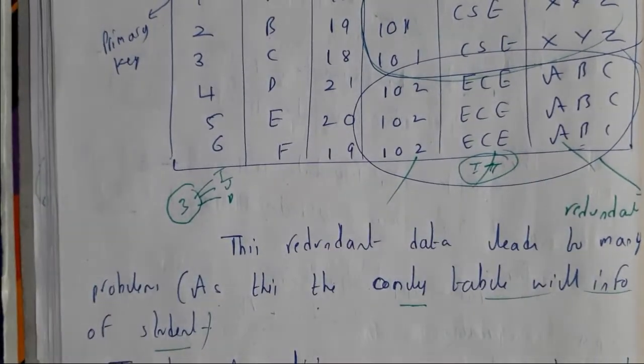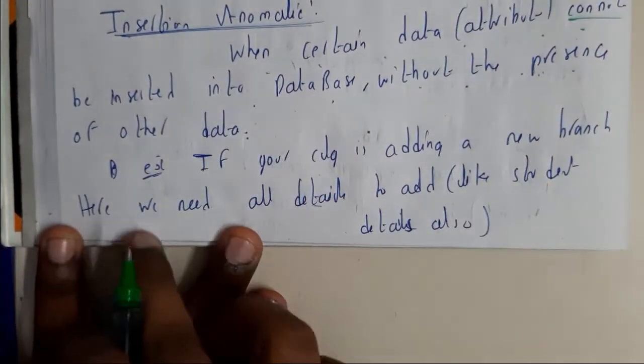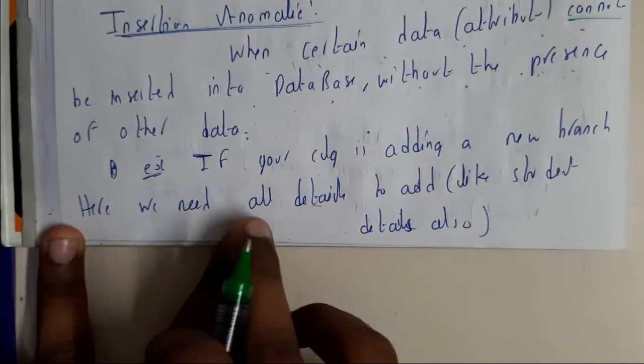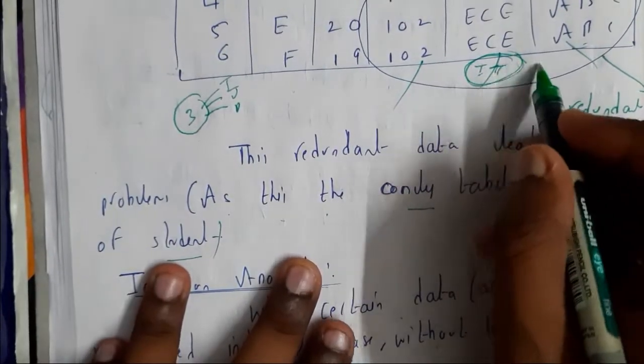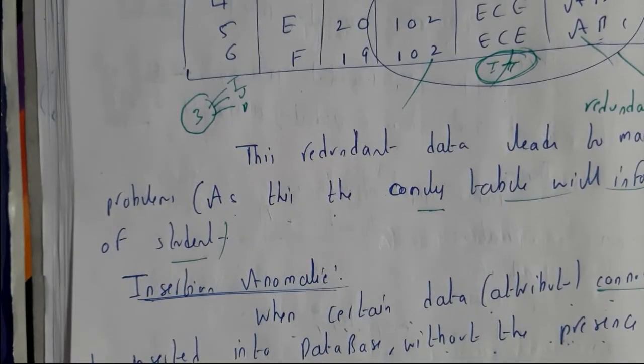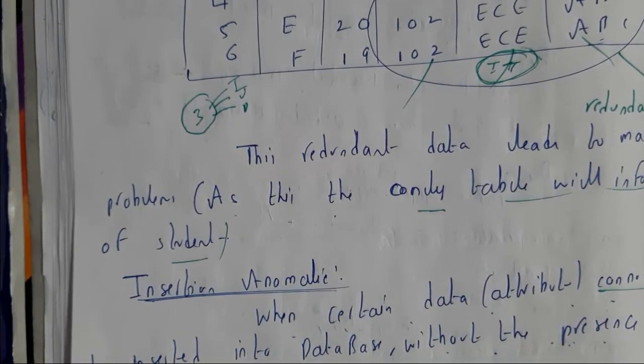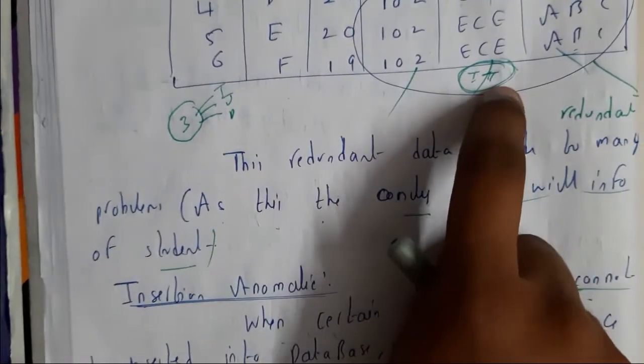If your college is adding a new branch, you need all the details to be added. If you are adding a new branch, will you get a student along with the branch? No, we need to have the value of the branch separately and then insert the values. That type of process is not possible because of this redundancy and we are having single table values.